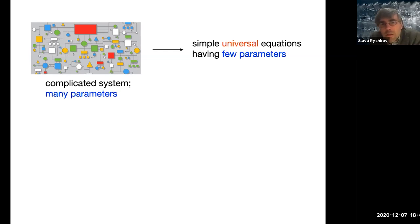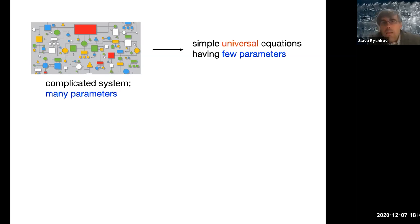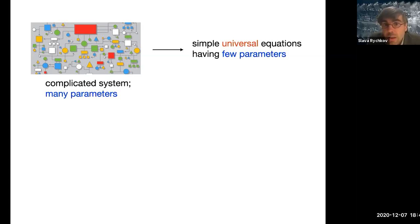But actually, more often than not, it turns out to be the other way around. The system is complicated but there are going to be emerging some equations, some general laws, which are first of all relatively simple, and second they have relatively few parameters compared to the total number of parameters characterizing the system. Moreover, these general laws are going to be often universal, meaning that there are going to be many different systems characterized by the same general equations.